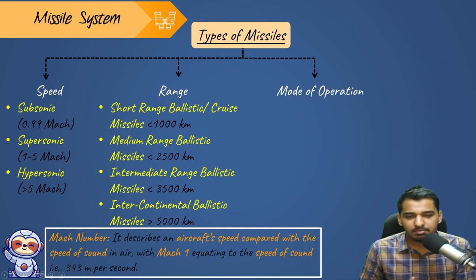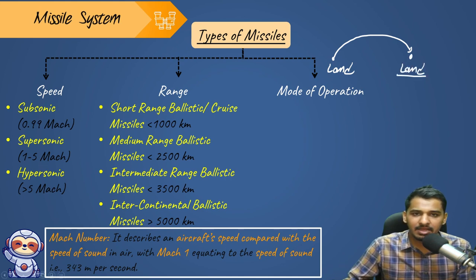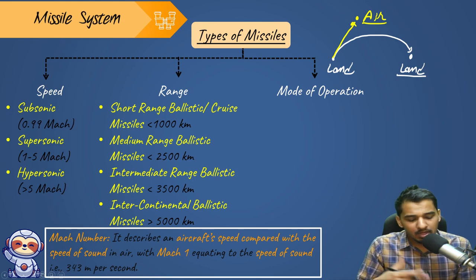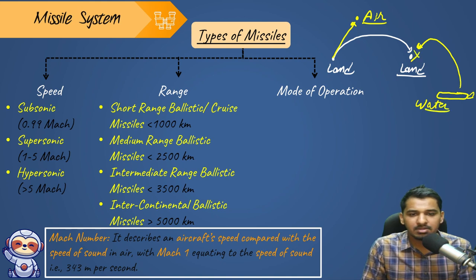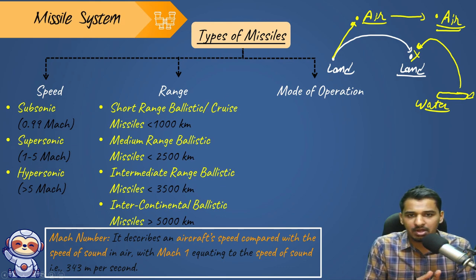Third classification is based on mode of operation. A missile can be fired from land to land, from land towards an aircraft in air, or from a submarine underwater towards land on the surface. It can also go from air to air — from one aircraft towards another enemy aircraft. These are the various modes of operation.